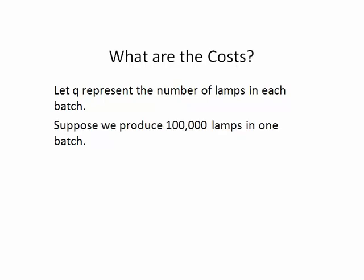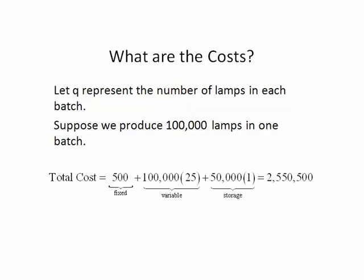As a first example, let's find the cost to produce all 100,000 lamps in a single batch. The total cost consists of three terms. It costs $500 to set up the single batch, 100,000 times 25 to produce the lamps, and 50,000 times 1 to store an average of 50,000 units for a year. This gives a total cost of $2,550,500.